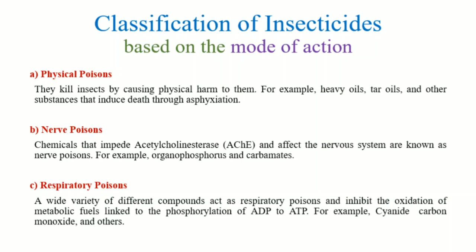Next are nerve poisons. These are poisons which inhibit acetylcholinesterase enzyme, an important enzyme involved in nerve impulse transmission, affecting the nervous system. Examples include organophosphorus compounds and carbamates.